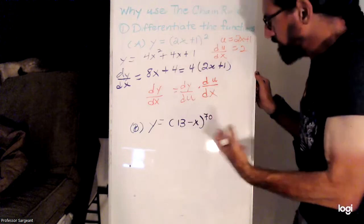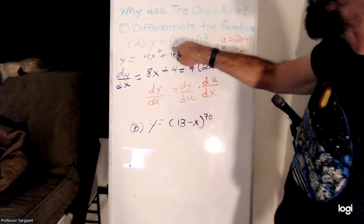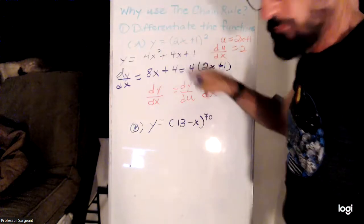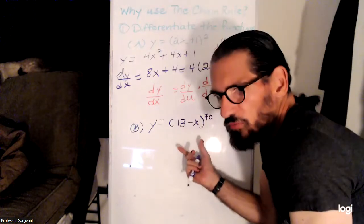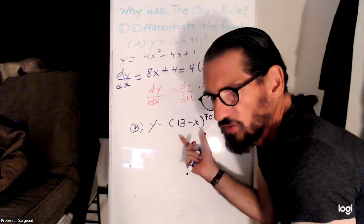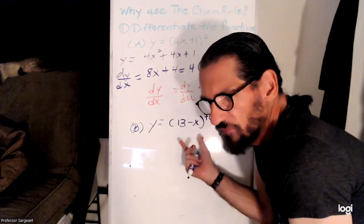So notice that when we squared this there were three terms. If you were to try to multiply out 13 minus x to the 70th power, there would be 71 terms.